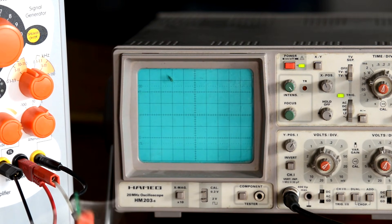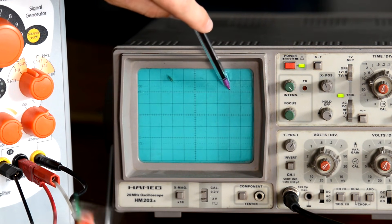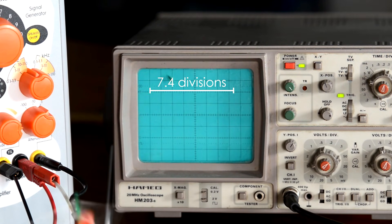Now, we want to know how long in seconds one complete wave is. So, let's count the squares from peak to peak. One, two, three, four, five, six, seven. I'm going to say that that is 7.4 squares.